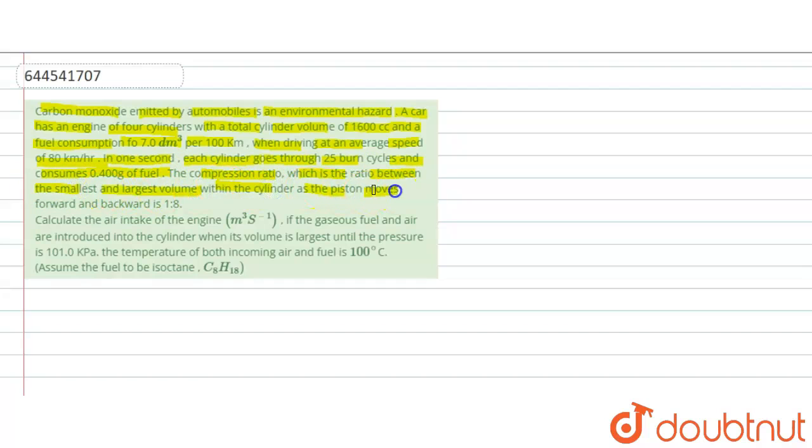Calculate the air intake of engine meter per second cube if the gaseous fuel and air are introduced into the cylinder when its volume is largest until the pressure is 101.0 kilopascal. The temperature of both incoming air and fuel is 100 degree celsius.